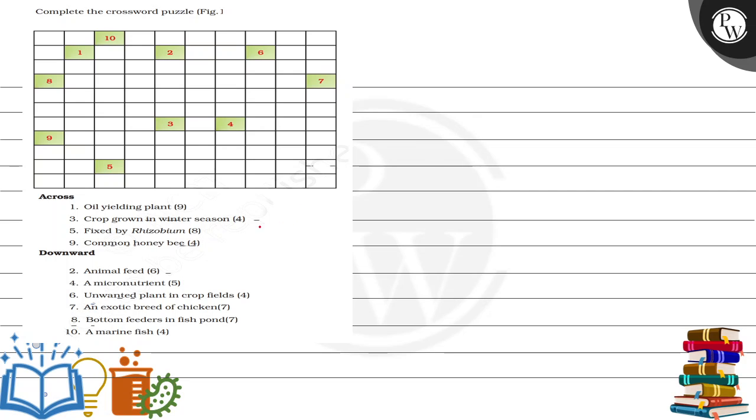We can write them all. For example, the crop grown in winter season - this is our rabi crop. And we call the fodder for animal feed. Common honey is also our apples. And we call the unwanted plants. And we know in the bottom feeder. And we can write in exotic breeds, we can write the leghorn.